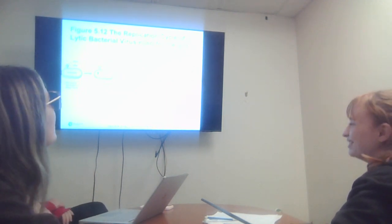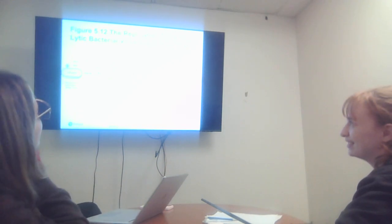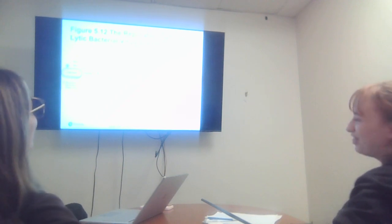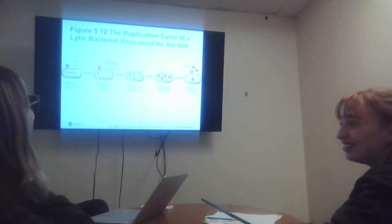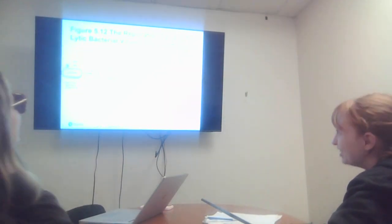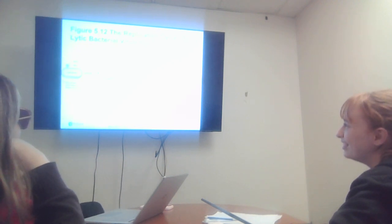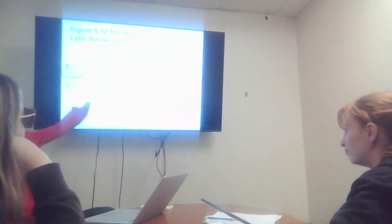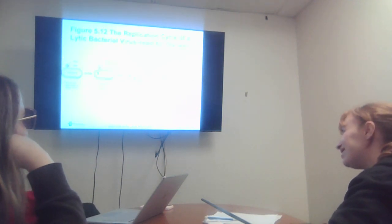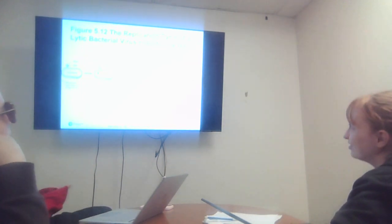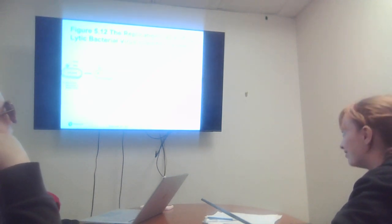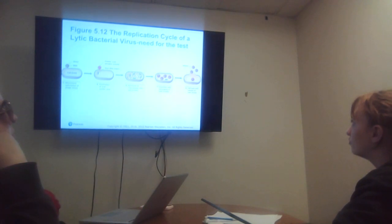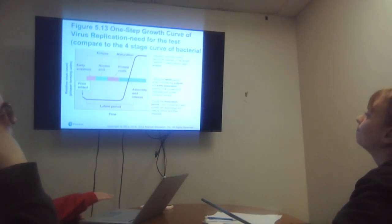The replication cycle of a lytic bacterial virus. We need to know this for the test. You start with the host cell and the virion. The virion sits on the outside of the cell during attachment. It absorbs the phage virion but the protein coat remains outside and the viral DNA enters. That's the penetration of the viral nucleic acid. Then synthesis of viral nucleic acid and protein when they replicate. Then they assemble and package to make new viruses. Then cell lysis and the new viruses and virions are released into the body.